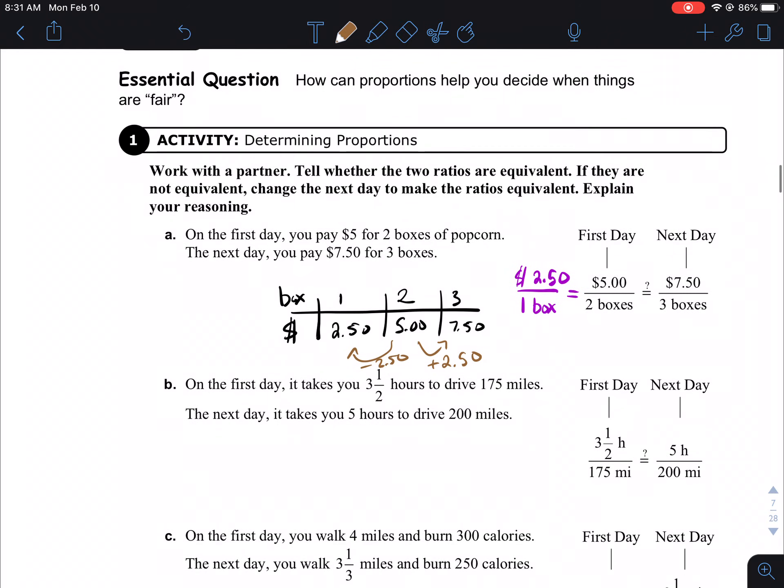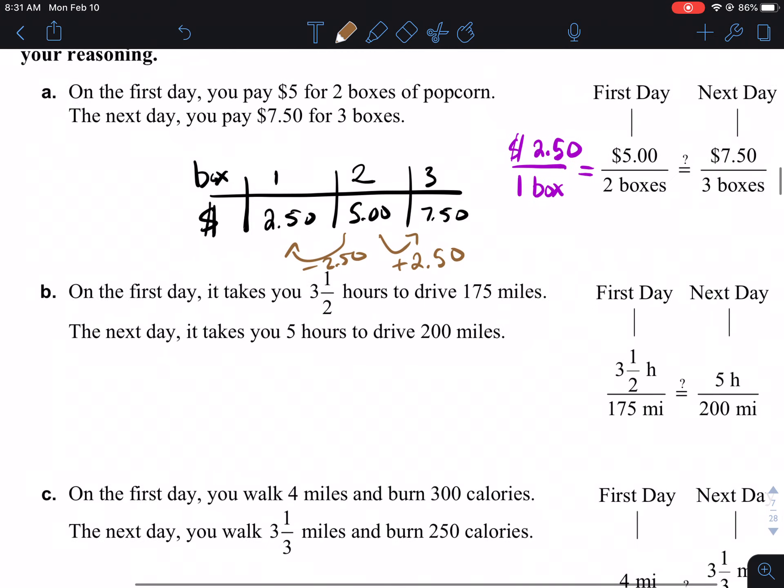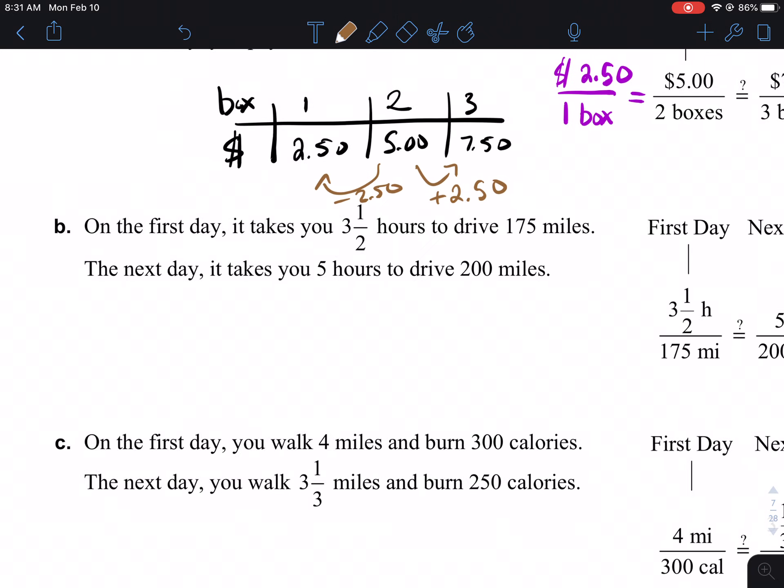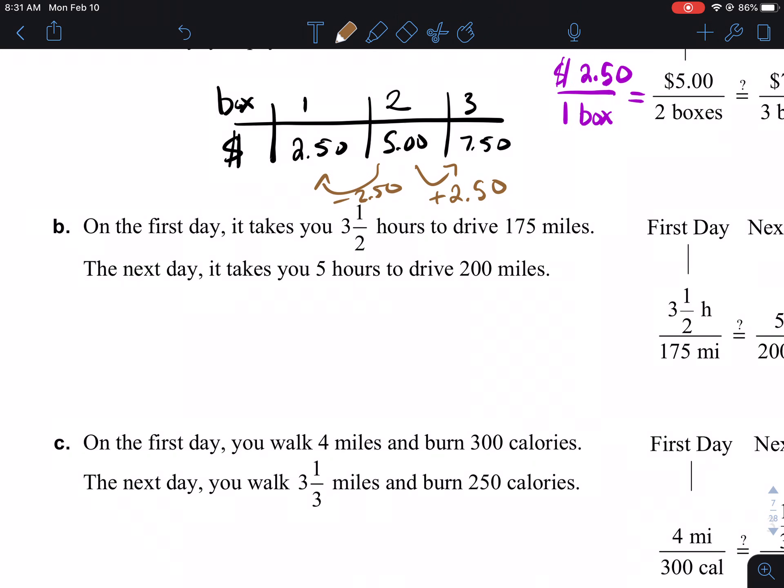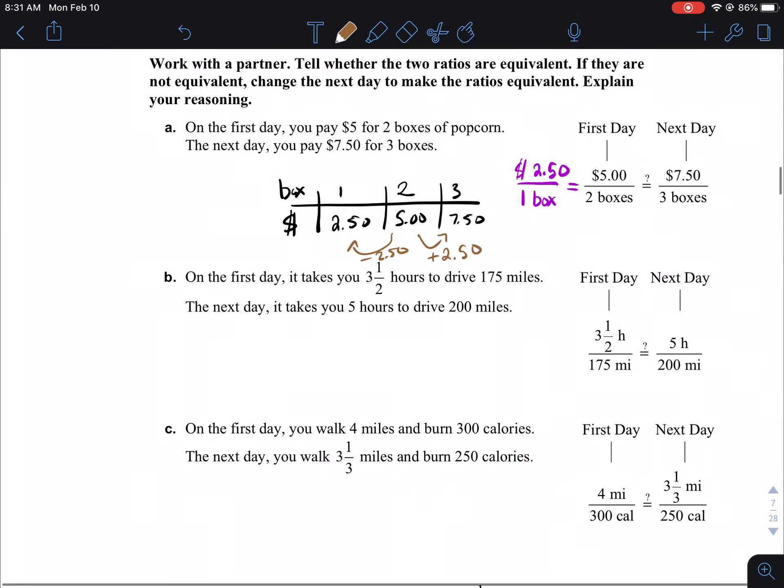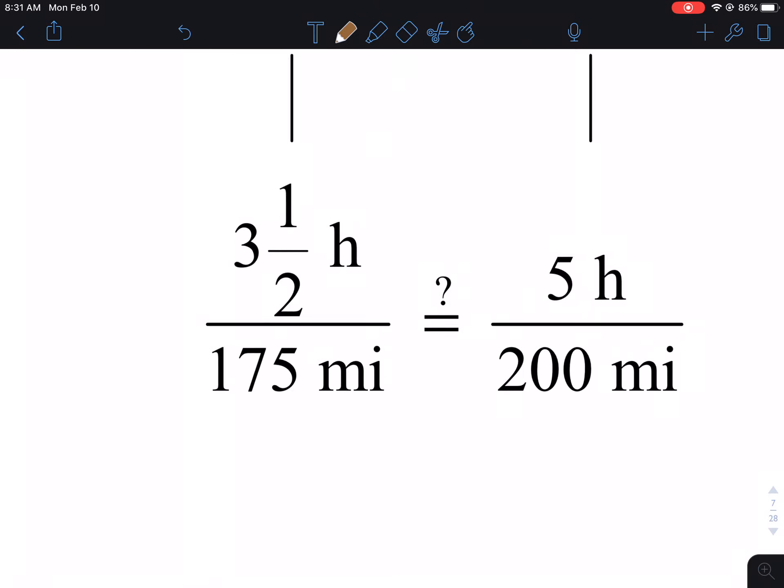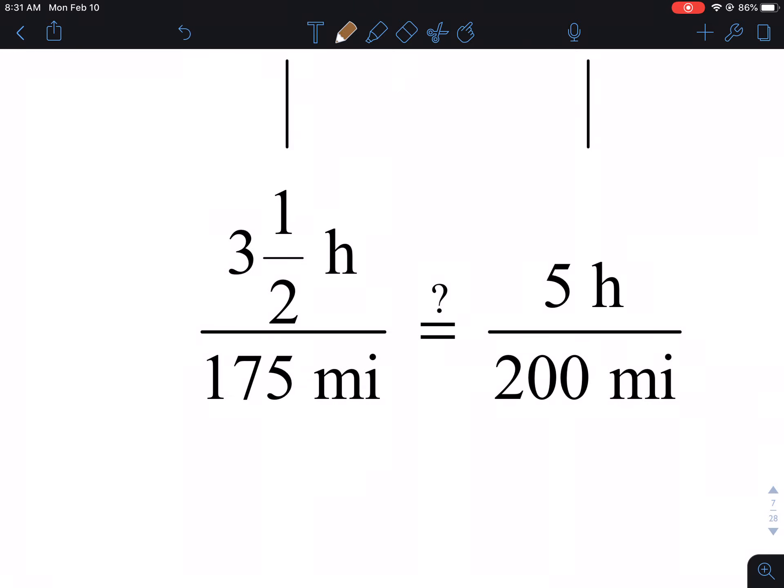Now, B, it says, on the first day it takes you three and a half hours to drive 175 miles. The next day, it takes you five hours to drive 200 miles. Are these fractions equivalent? In other words, are you driving the same speed per day, right? And let's try to figure that out. I think it's a good question. So let's take a look at this. Are these equal?